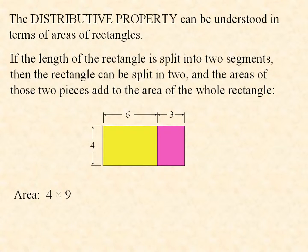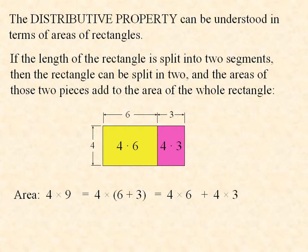Here we split the rectangle into two pieces of length 6 and 3. The area of that rectangle is the width 4 times the length, which is 6 plus 3, and that can also be found by adding the areas of the individual rectangles that make it up. So 4 times 6 plus 3 is the same as 4 times 6 plus 4 times 3.